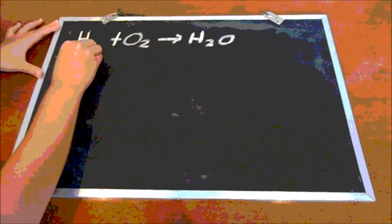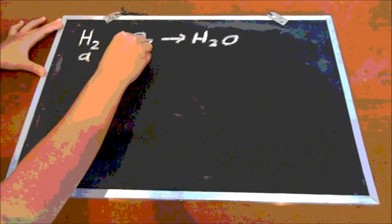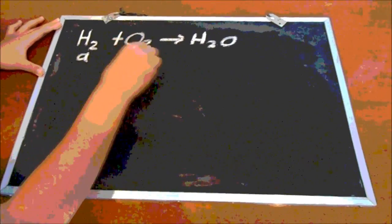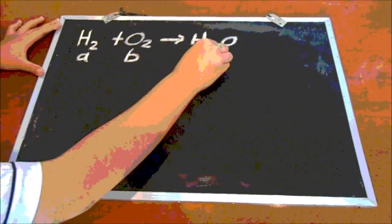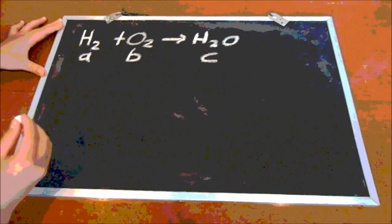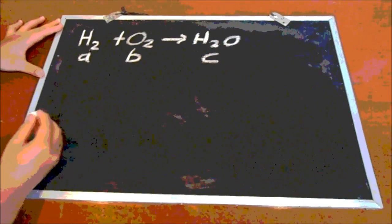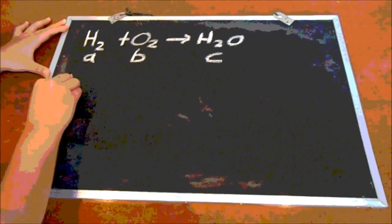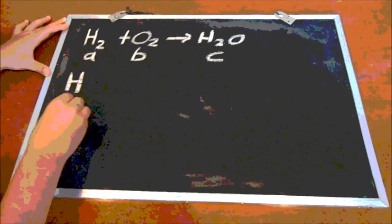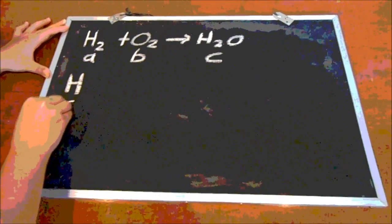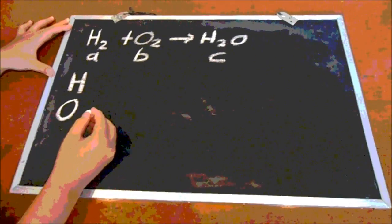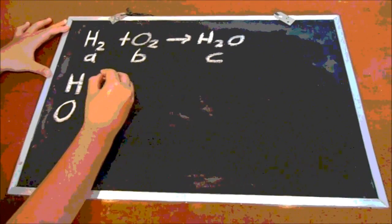So first, we write down variables to represent each element, like A, B, C. Then, we write down all of the elements. In this case, it's only hydrogen and oxygen.